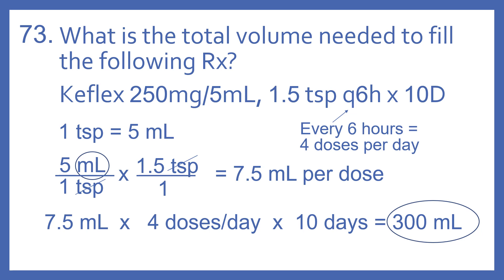So 7.5 milliliters times 4 doses per day, and it's for 10 days, so times 10 days. 7.5 times 4 times 10 equals 300 milliliters.